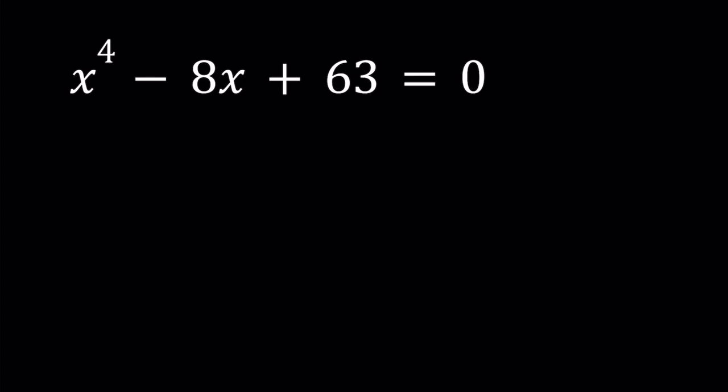So we have x to the fourth power minus 8x plus 63 equals 0. Notice that I don't have an x cubed term and I don't have an x squared term. So some of the terms are missing which is actually a good thing especially for the first method.